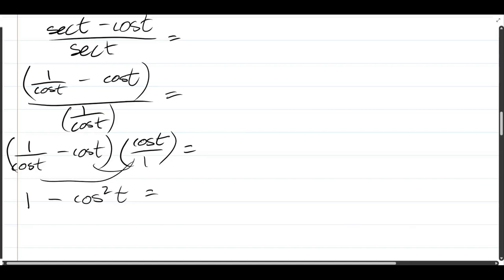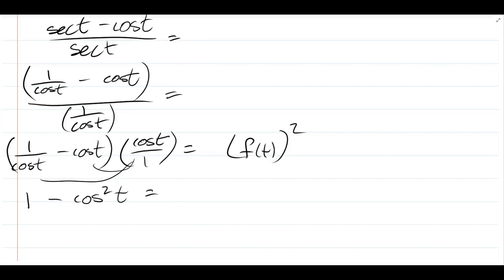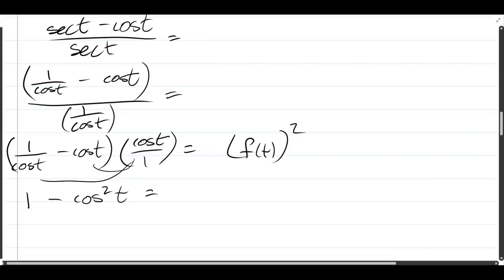Now what to do next, this is supposed to look like some function of t squared. And right now it's 1 minus a function of t squared. So how are we going to turn this into a single function of t squared, not 1 minus a function of t squared? Well, I see a cosine squared, and I know my Pythagorean identities. They all deal with squared versions of the trig functions.